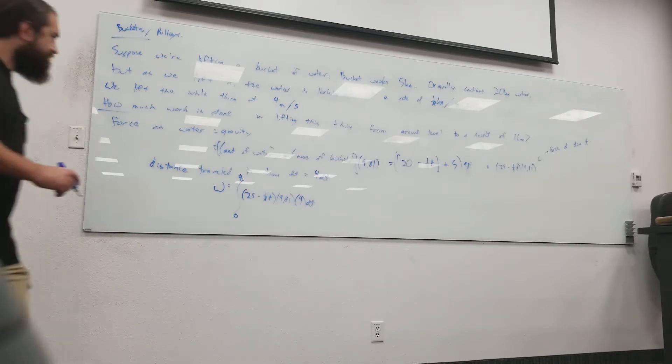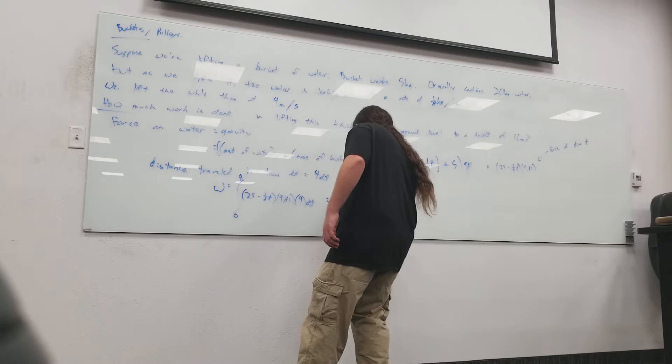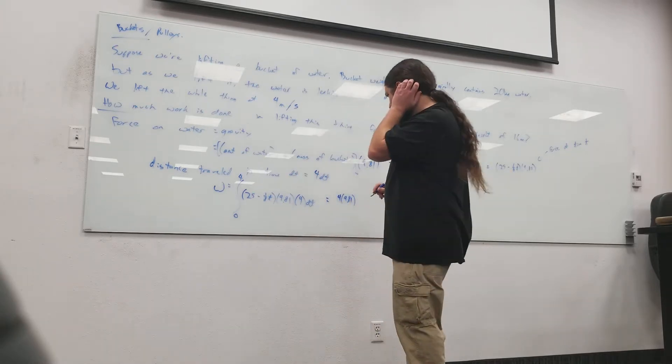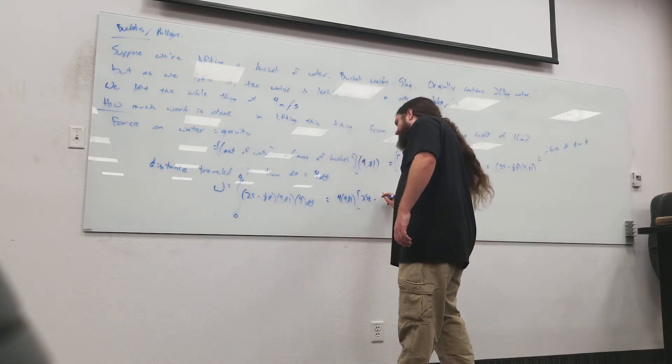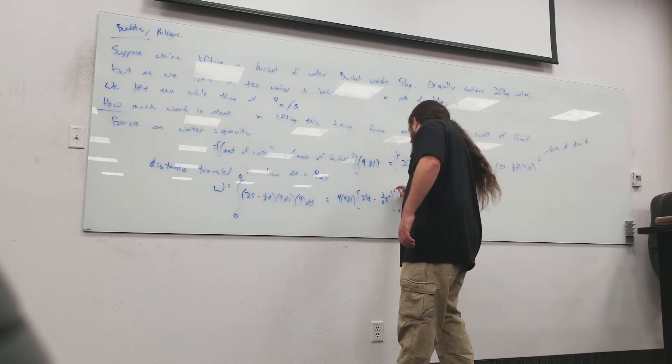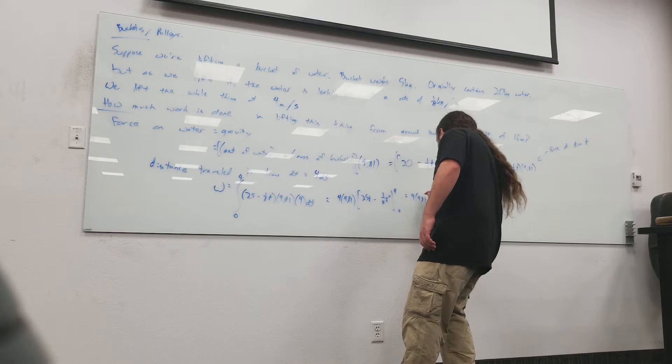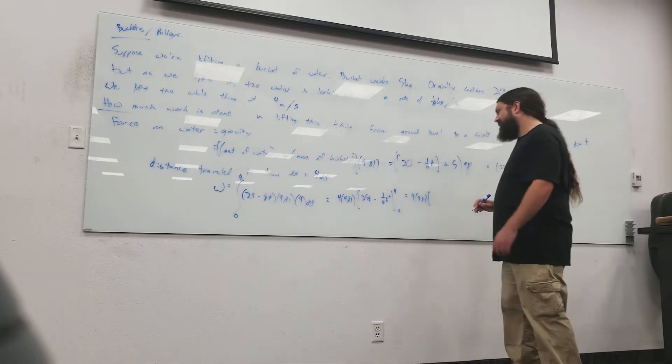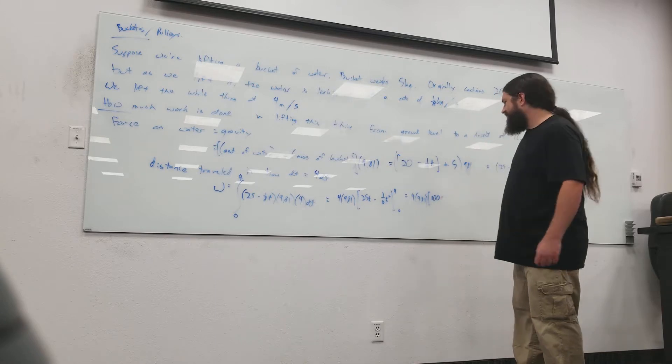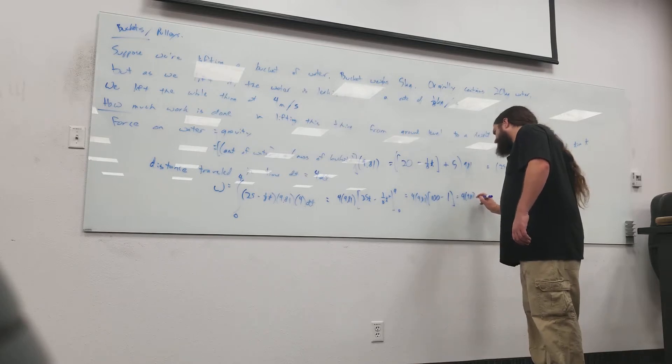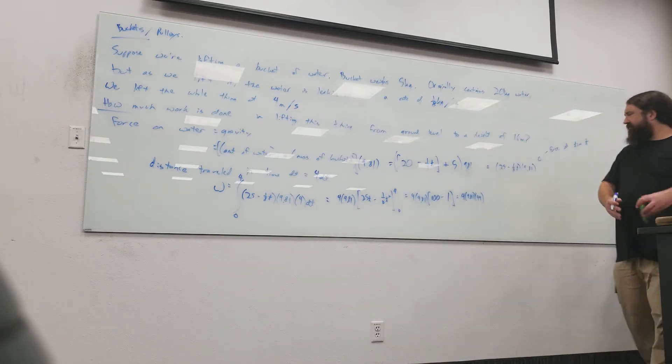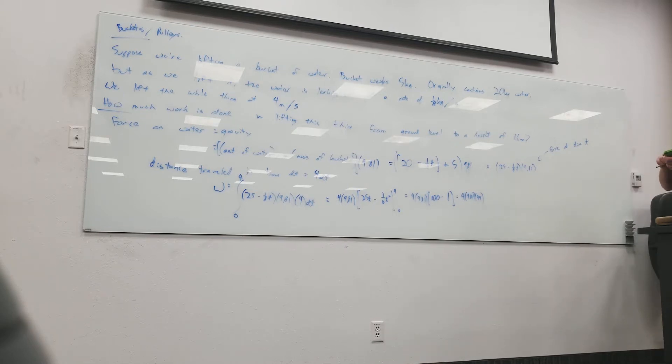This we can do, I can factor out four times 9.81, integral of 25 minus one-eighth T is going to be 25T minus one-sixteenth T squared, zero to four. 25 times four is a hundred, minus 16 over 16 is one. So it's four times 9.81 times 99. And just to get a numerical answer on this thing.